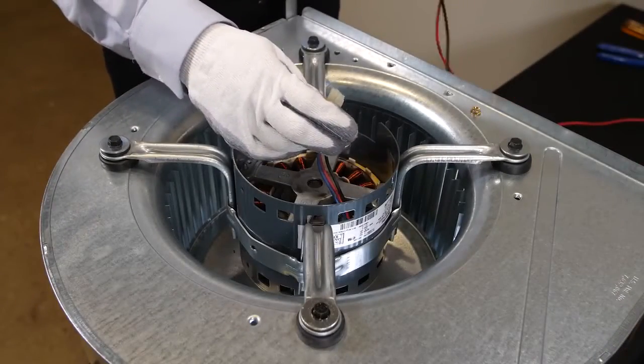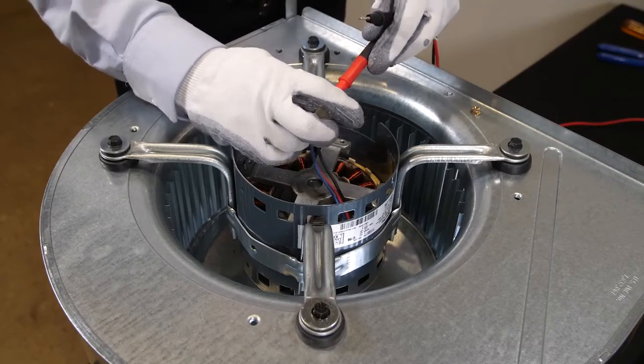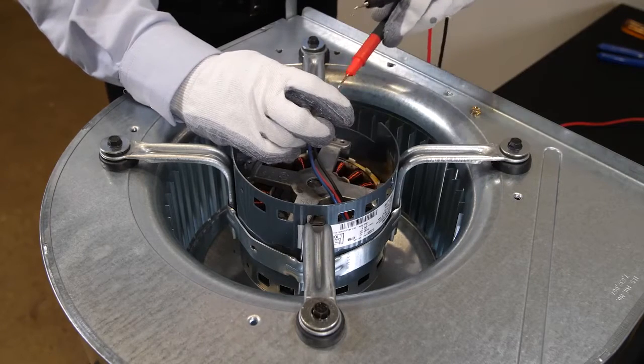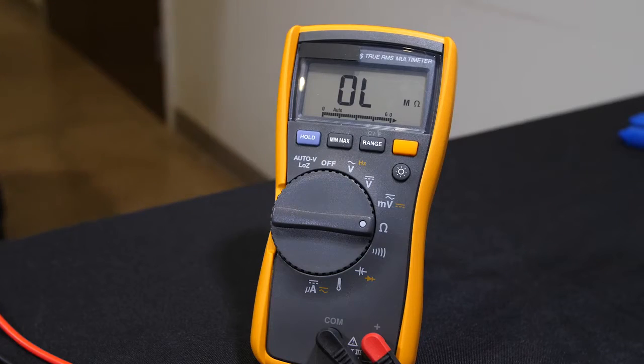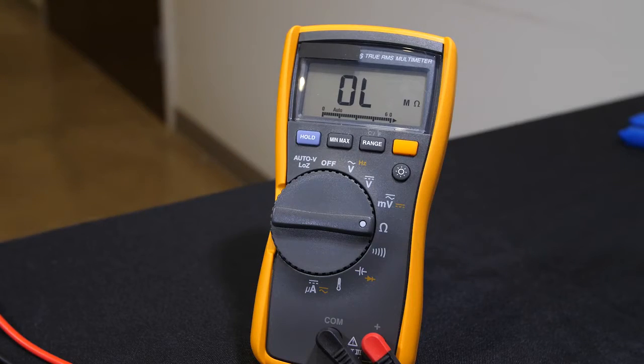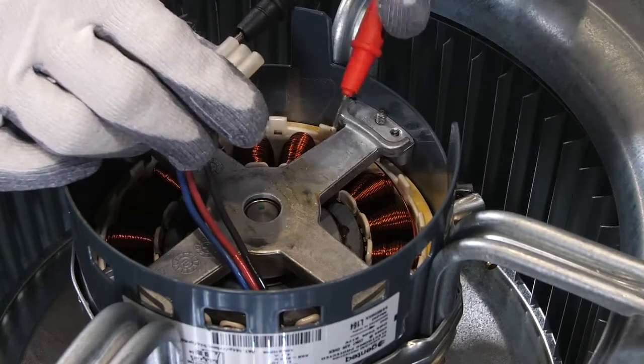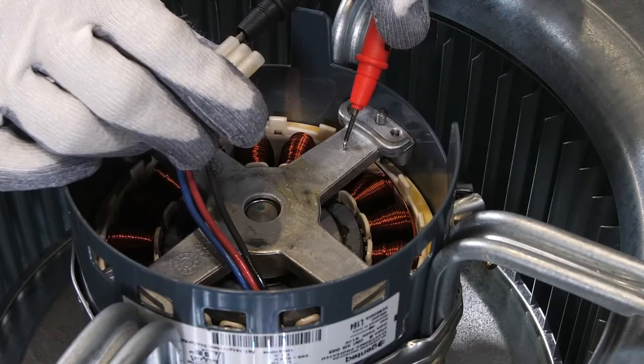Check for short to ground. Use an ohm meter to measure the resistance from all three of the motor connector pins to the aluminum end plate of the motor. This resistance should be greater than 100,000 ohms. If this test fails and you have less than 100,000 ohms, you have a defective motor and it needs to be replaced.